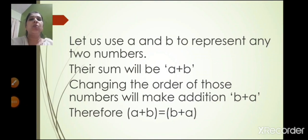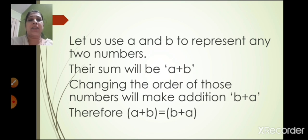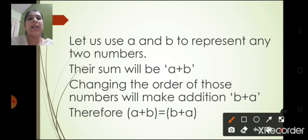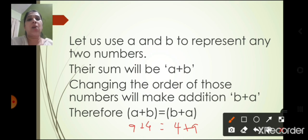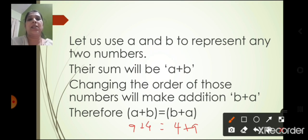Let us use A and B to represent any two numbers. Their sum is A plus B. Changing the order gives B plus A. Since 9 plus 4 equals 4 plus 9 (taking A as 9 and B as 4), we can write therefore A plus B is equal to B plus A. It is one and the same.